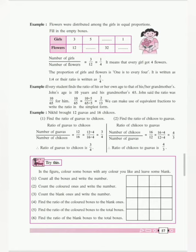To find out the solution of ratio of chikus to guava, we will place the number of chikus in the numerator and number of guavas in the denominator.